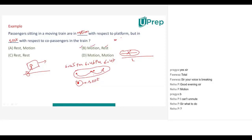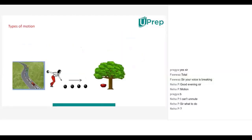Motion and rest are also relative — not absolute. That means you can't say absolutely this object is in a state of rest or motion. If one object is in a state of rest according to one person, it may be in a state of motion according to another person. So that's why it is relative. When it is relative, by comparing you have to say whether it is in a state of rest or motion.